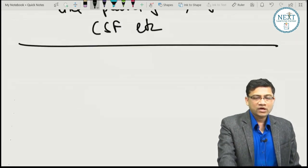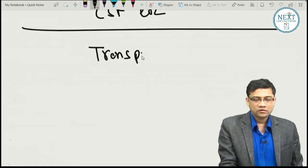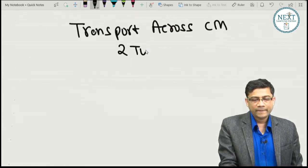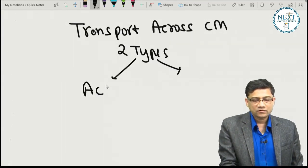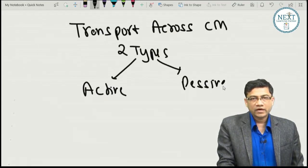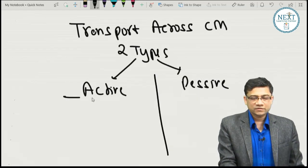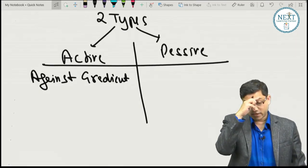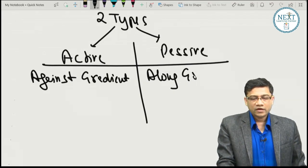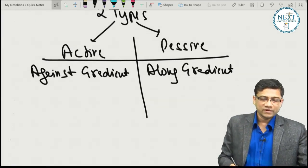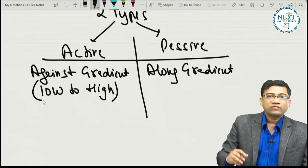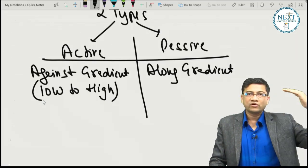Transport across the cell membrane is of two types: active and passive. Active transport is against the concentration gradient, while passive transport is along the gradient. In nature, everything moves from higher to lower energy states — like a hot cup of tea cooling down. To move against the gradient (lower to higher), energy is required, just like heating a cup of tea requires energy. Active transport therefore requires energy (ATP), while passive does not.